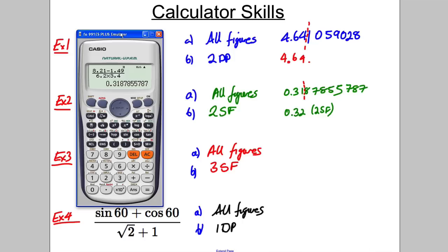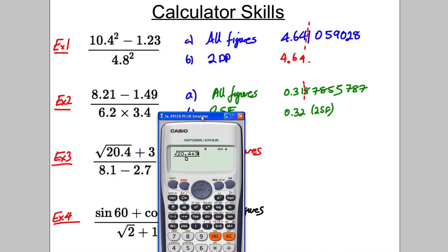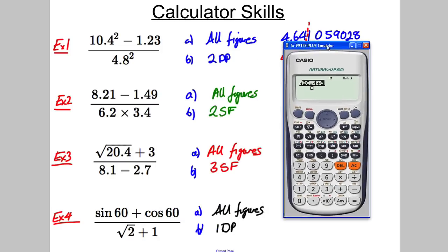Calculator out again. It's another fraction. So press the fraction button. Press square root, 20.4. Now it's really important you do this. If you do plus 3, you'll notice that the 20.4 and the 3 are under the square root. You don't want that.